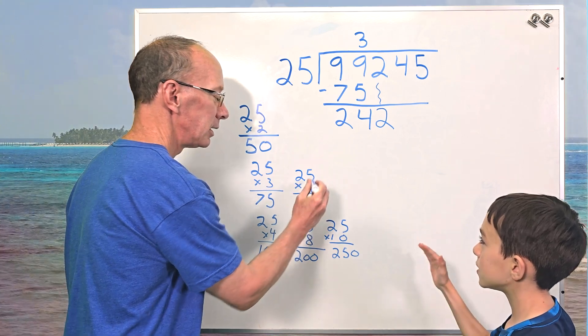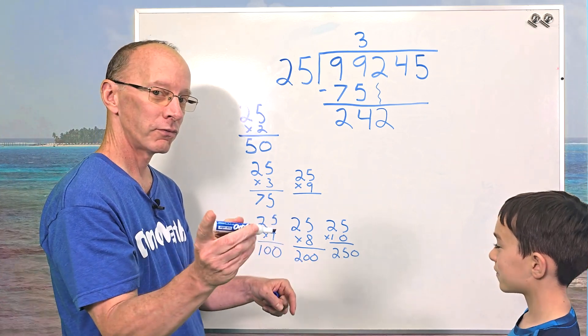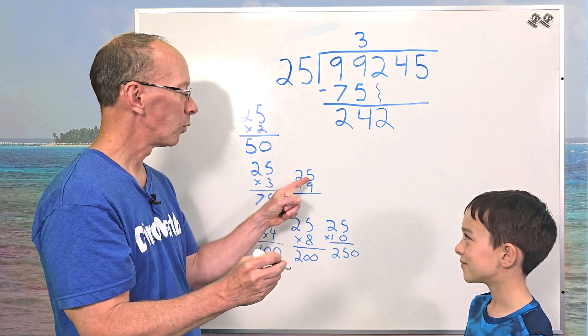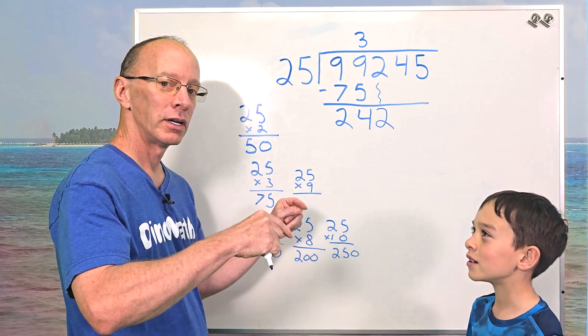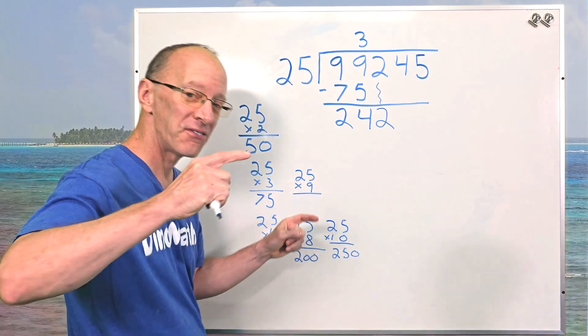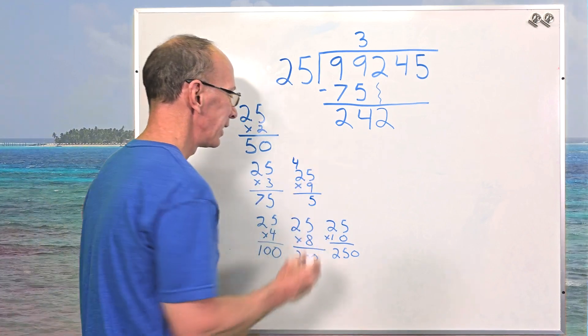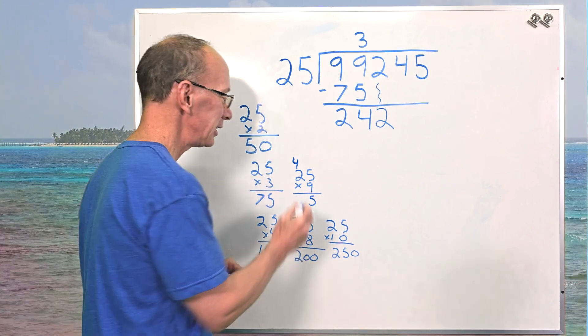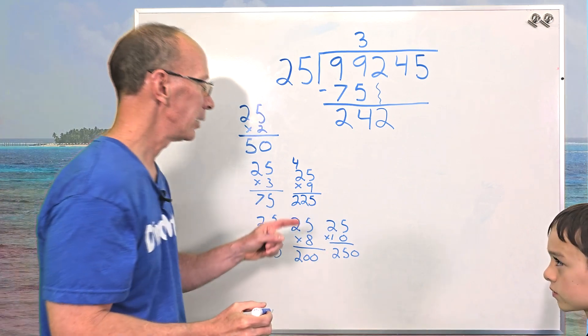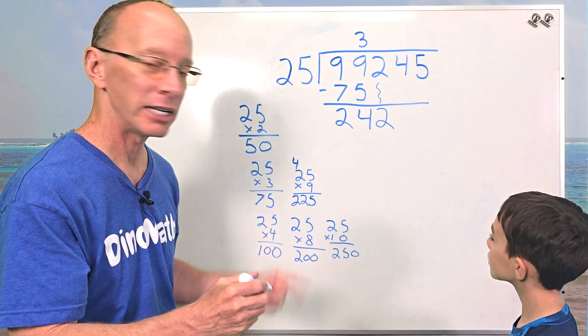So let's see what 25 times nine equals. Well, you know, nine times five. Do you know what nine times five equals? There's a trick with nines. One less than five equals four. And what plus four equals nine? Five. 45. So it is 45. And nine times two is 18. 19, 20, 21, 22. All right. So we have 225. So 25 times nine equals 225.